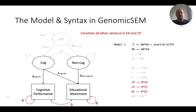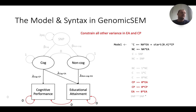We need to impose constraints on the observed variables because we're saying the entirety of the variance and covariance of EA and cognitive performance is explained by COG and non-COG, with no other source of variation. The lines in red in the model syntax define the covariance between cognitive performance and EA to be 0, the residual variance of cognitive performance to be 0, and the residual variance for educational attainment to also be 0. Using LaVan syntax — using 0 and the star — we constrain these covariance and variance parameters to 0.